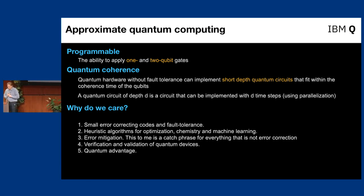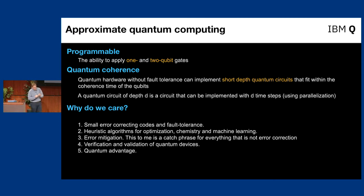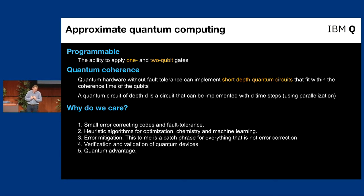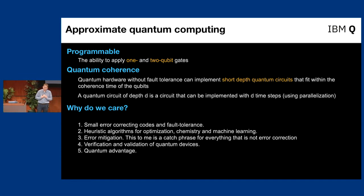What I mean when I say 'approximate': number one, it's programmable — it has the ability that we can program what we do. Number two, I can fit the quantum computation within the coherence of my device. And why do I care about this? Well, for a number of reasons — one of them is, like always, to keep studying error correcting codes and fault tolerance and understanding how we make these devices bigger.